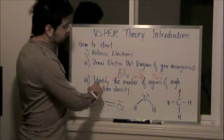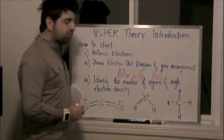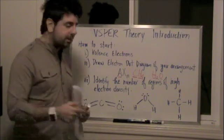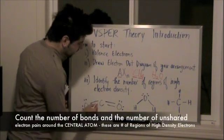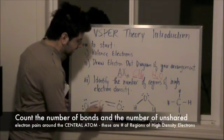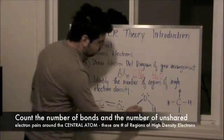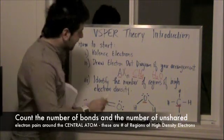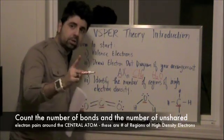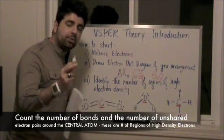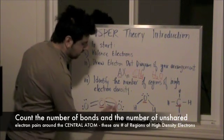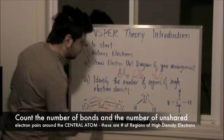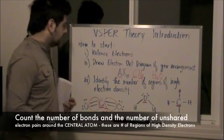The next step is to identify the number of regions of high electron density. How do you do that? Well, there are two things. You're looking for the number of bonds from the central atom and it's the central atom that is where you look at. The central atom. From the central atom, look at how many single, double, or triple bonds form with that single. And so we have one double bond here, one double bond here, which gives us 2 regions of high electron density.